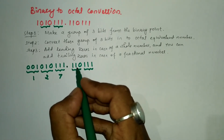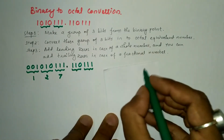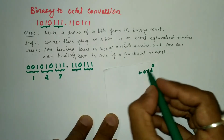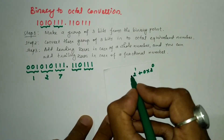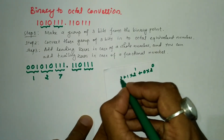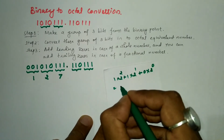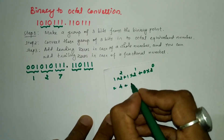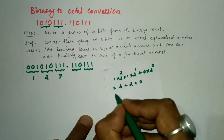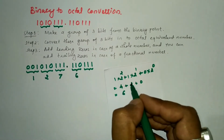Converting the first fractional group 1, 1, 0: the positional weight of the rightmost 0 is 2 to the power 0 into 0, plus 2 to the power 1 into 1, plus 2 to the power 2 into 1. That gives us 0 + 2 + 4 = 6. So the group 1, 1, 0 represents 6.